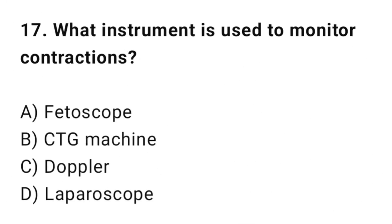Question number 17. What instrument is used to monitor contractions? The correct answer is B: CTG machine.